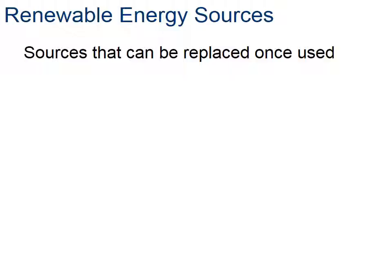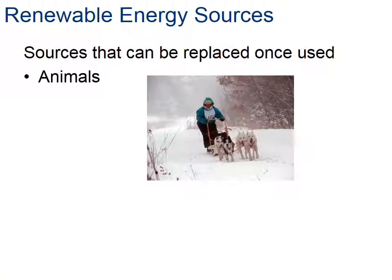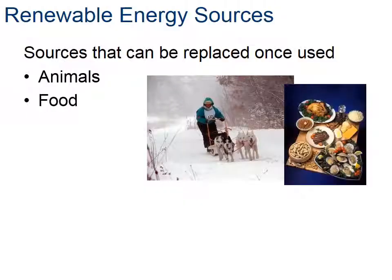Now let's talk about renewable energy sources. Renewable implies that the source can be replaced once it's used. Animals, for example - here we show a dog sled. Animals have been used throughout history to perform work, and in some countries still do. You can think of an ox or horse pulling a plow or helping turn some type of mill, especially for field work. Food, of course, fuels us, and we've already talked about that at the beginning of the presentation.